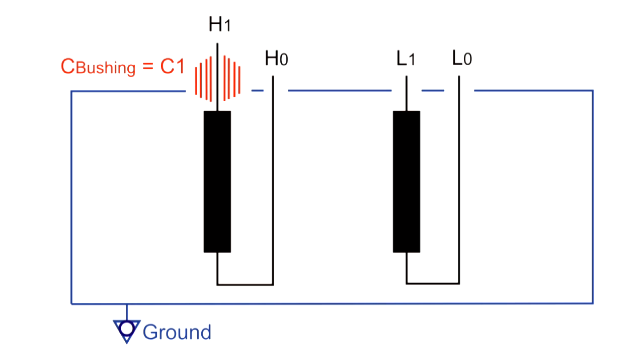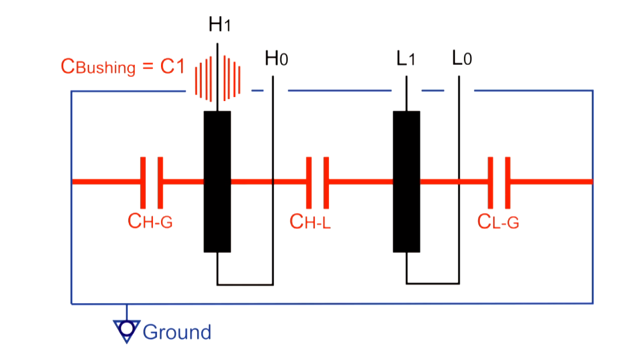There are three measurable capacitances: the one from the high voltage winding to the core, the one between the windings, and the one from the low voltage winding to the tank.